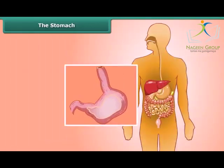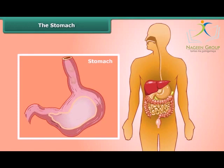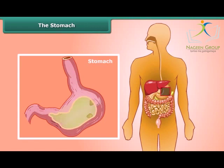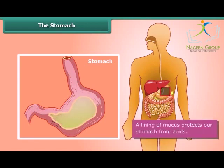The stomach is the widest part of the alimentary canal. It is a thick-walled bag with a flattened U-shape. Inside the stomach, food is churned and mixed with digestive juices including hydrochloric acid. These chemicals break down the proteins into simpler substances. A lining of mucus protects our stomach from the acids.